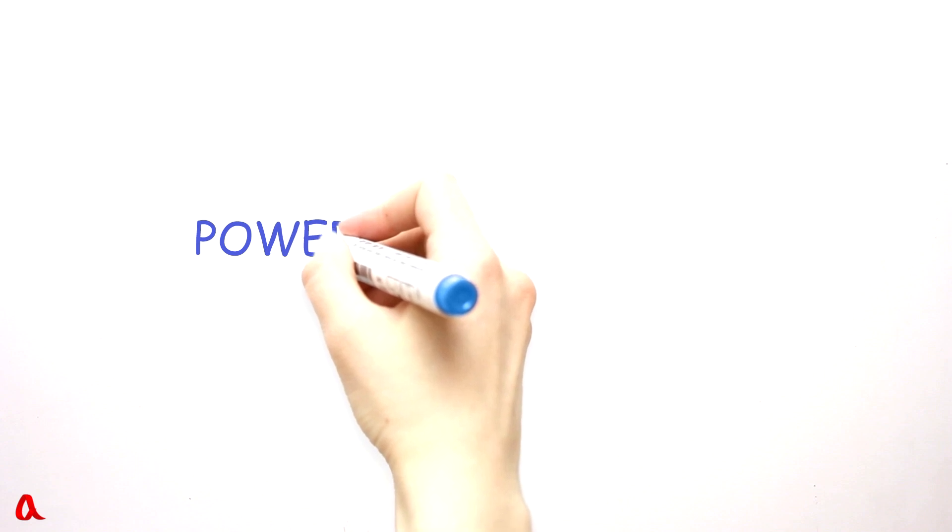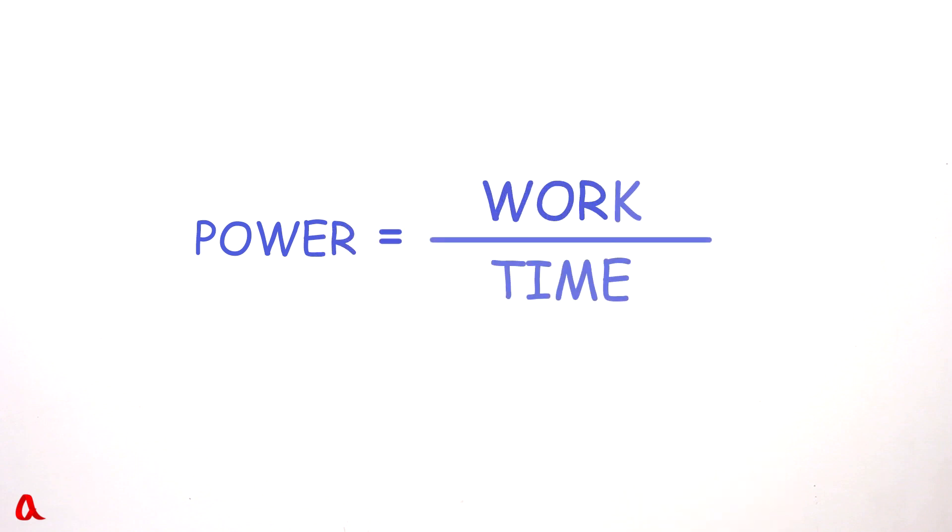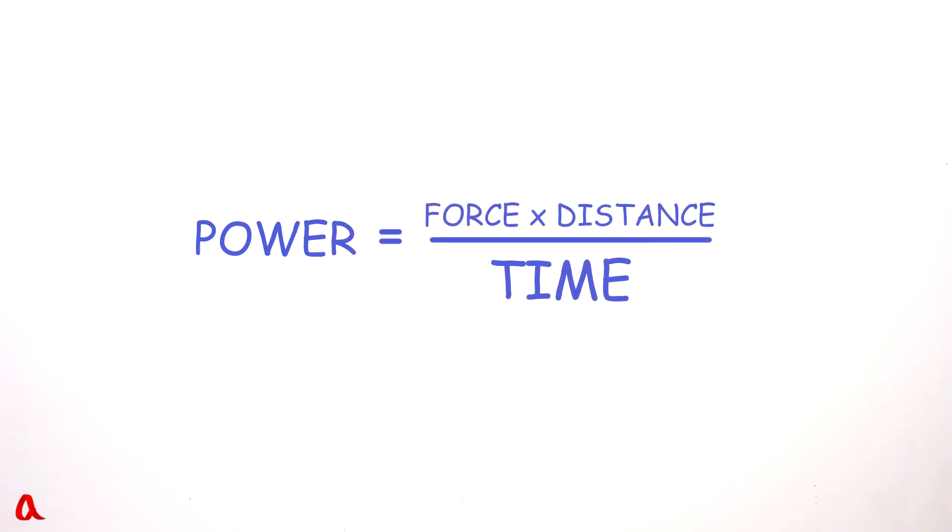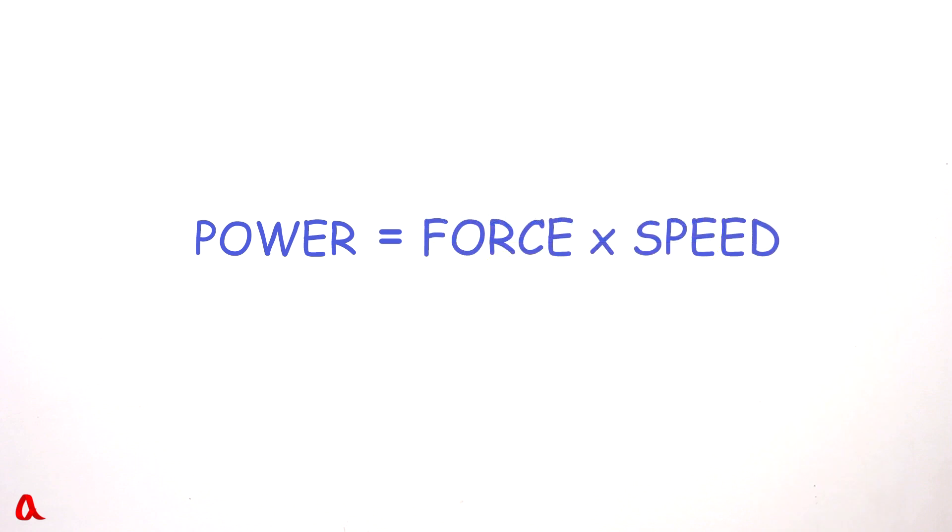Power is work divided by time. But work is force multiplied by distance. Distance divided by time is speed. Thus, power is force multiplied by speed.